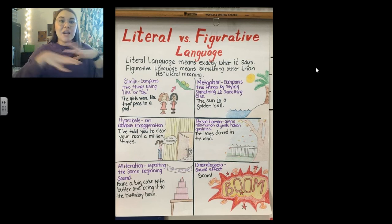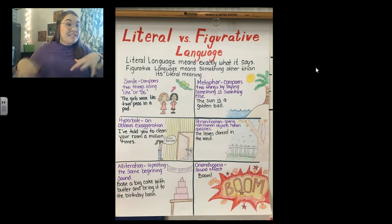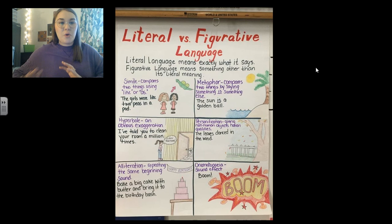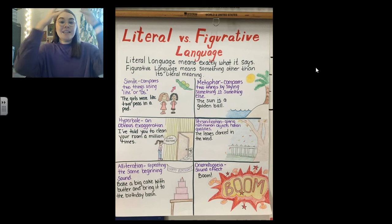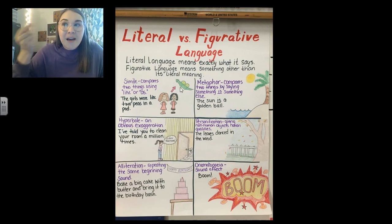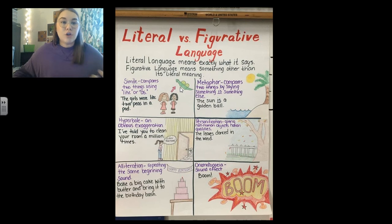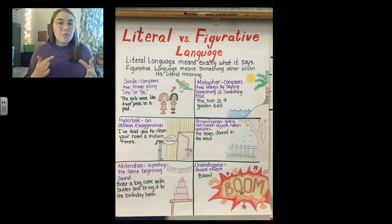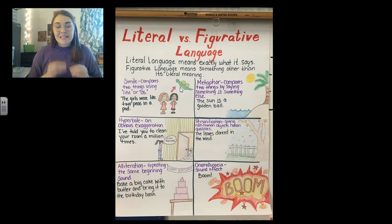Literal language is exactly what it says. So if I said, I'm going to the store, I mean I'm going to the store — I'm literally just going to the store. But figurative language means something other than its literal meaning. So for a simile, this one says the girls were like two peas in a pod. Literally, I would think those girls are two peas in a pod. But what that simile is doing is comparing those girls to two peas in a pod — meaning those girls are inseparable. They're best friends, they don't go anywhere without each other. So similes compare two things using like or as, but figurative language doesn't mean exactly what it says.